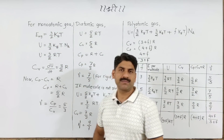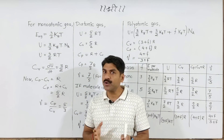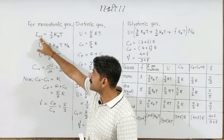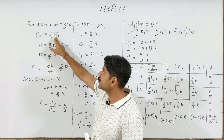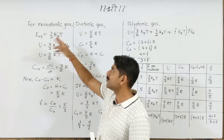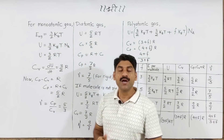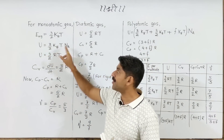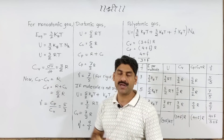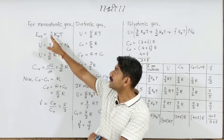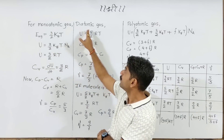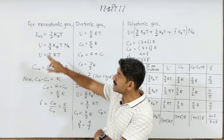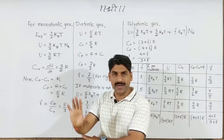For monoatomic gases — the noble gases — the average energy formula is 3/2 into kb (Boltzmann constant) into temperature T. This is the total internal energy formula. For one mole of monoatomic gas it is 3/2 RT, and for diatomic it is 5/2 RT.